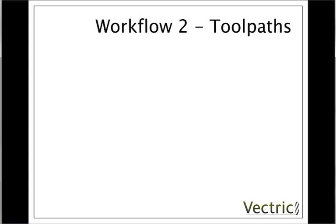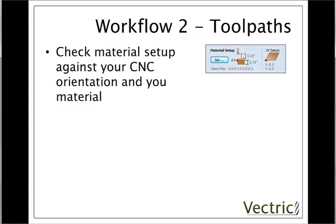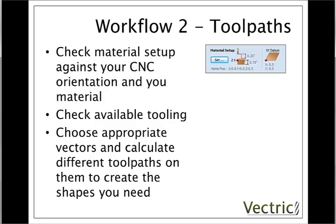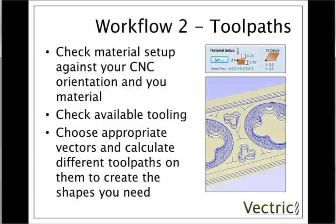On the next stage, we're going to create the data that will drive the CNC machine. The first job, which is very important, is to check our material setup in the program against the CNC and how we're planning to set up our material — checking that the size is right and also that the position we're going to tell the CNC to reference the job from is the same as what we've indicated in the program. Next, we might check our available tooling, and from that we can go ahead and calculate our toolpaths by selecting different vectors within the design and choosing different toolpath strategies appropriate to the shapes we want to create when we cut the part.